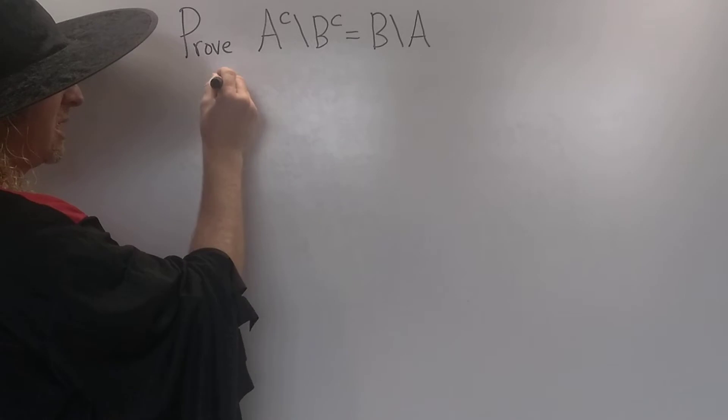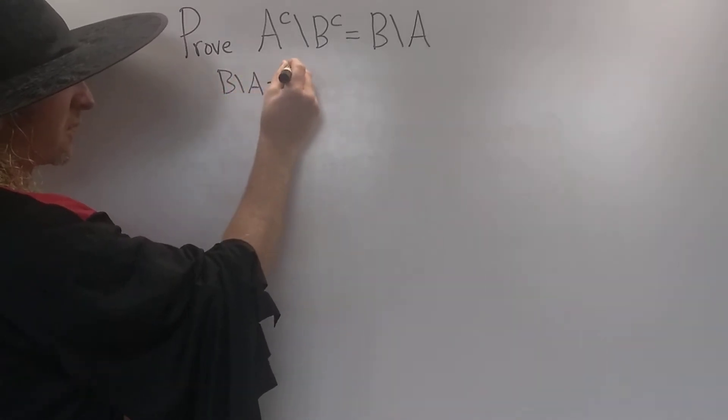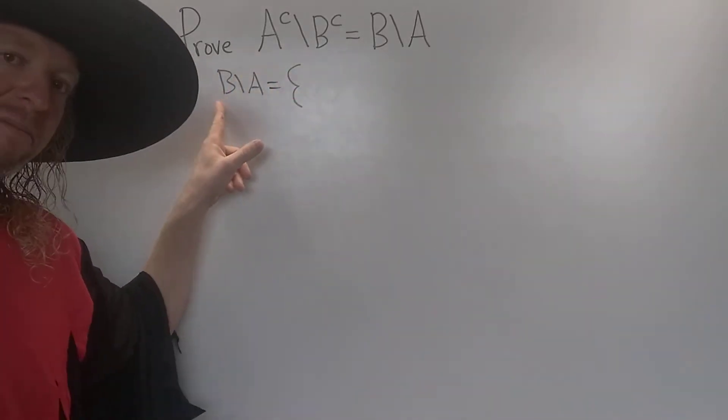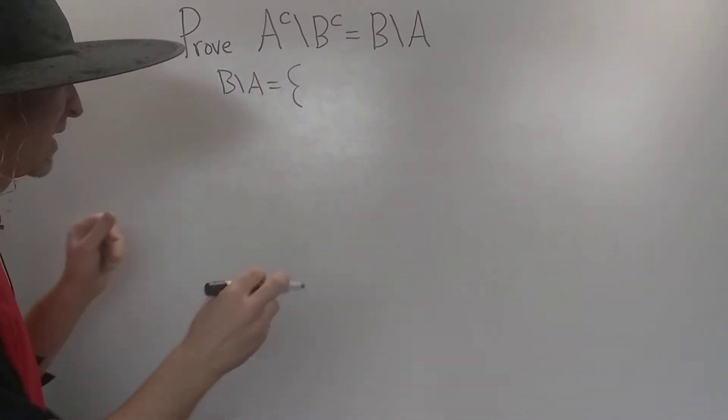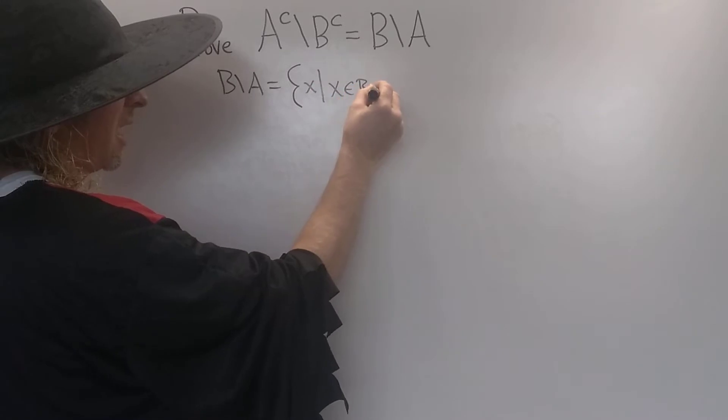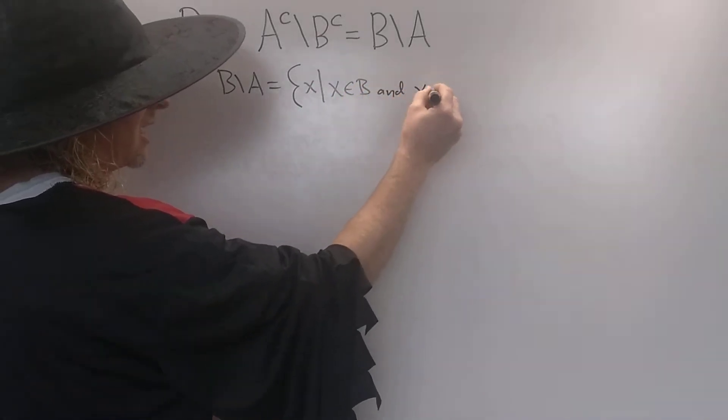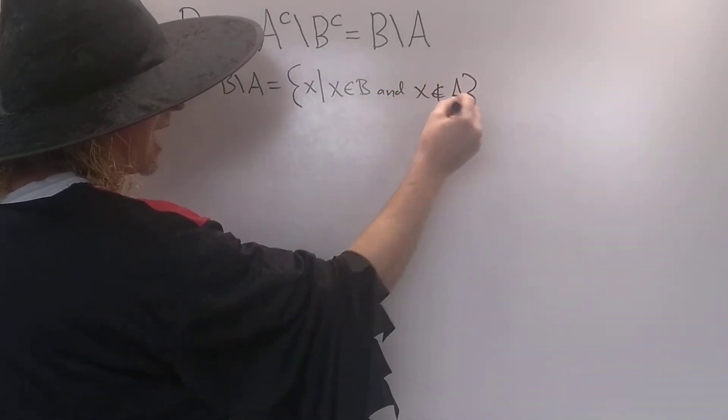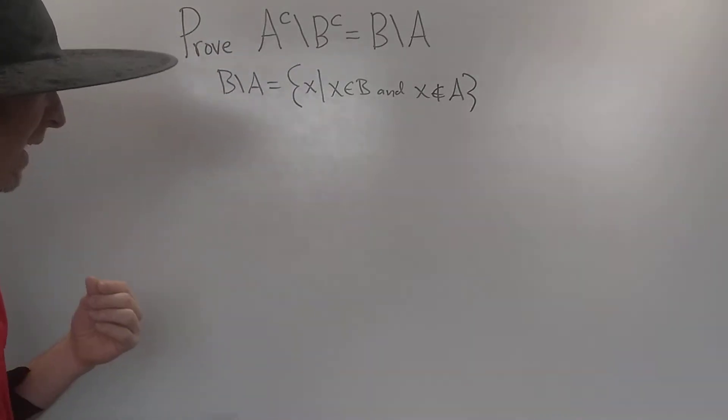Note that B set minus A in this problem is all the elements that are in B, but they're not in A. So it's all the X's such that X is in B and X is not in A. So X is an element of B, but it's not an element of A.